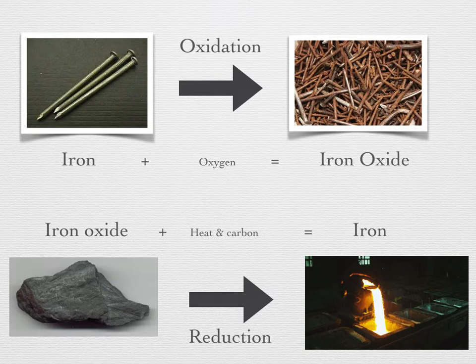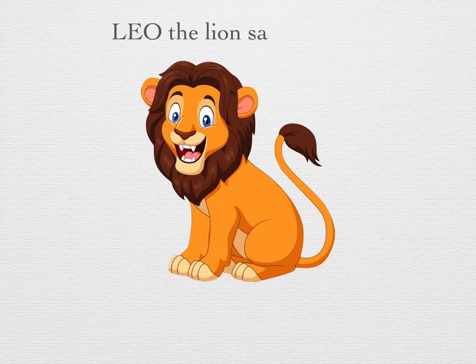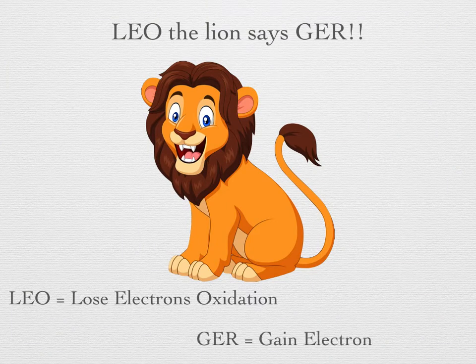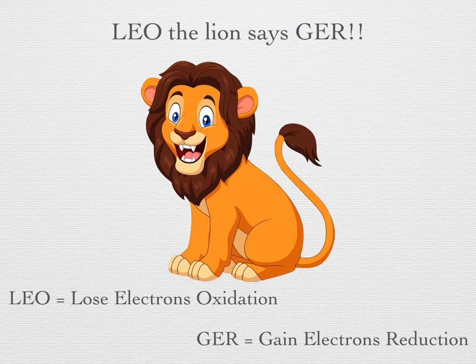There are several common mnemonics to remember how oxidation and reduction relate to the loss or gain of electrons. One is 'LEO the lion says GER': LEO stands for 'Lose Electrons Oxidation,' while GER is 'Gain Electrons Reduction.' Over time it is better to understand the chemical principles involved rather than relying on a mnemonic trick; however, such memory aids can be useful when you are starting into the field.